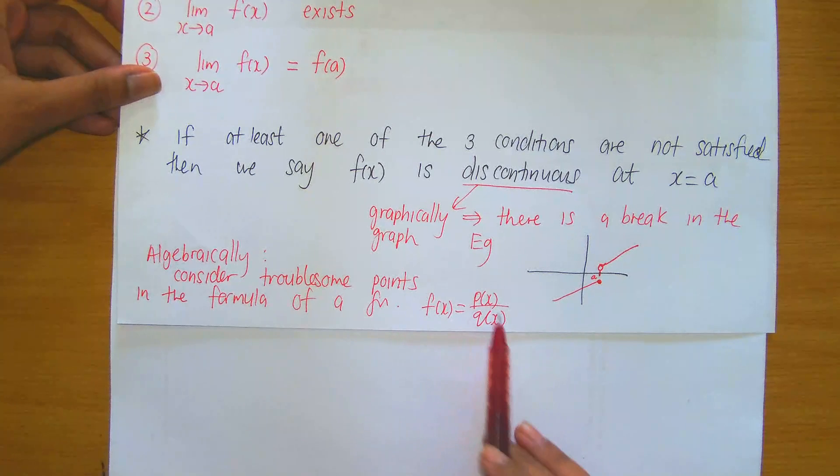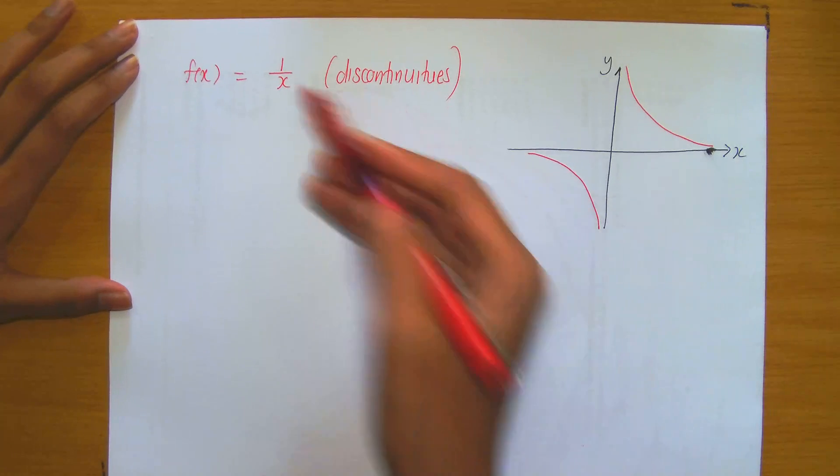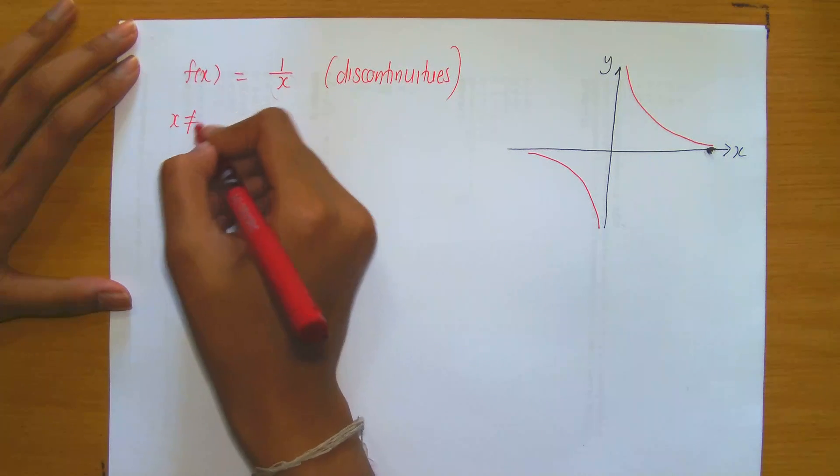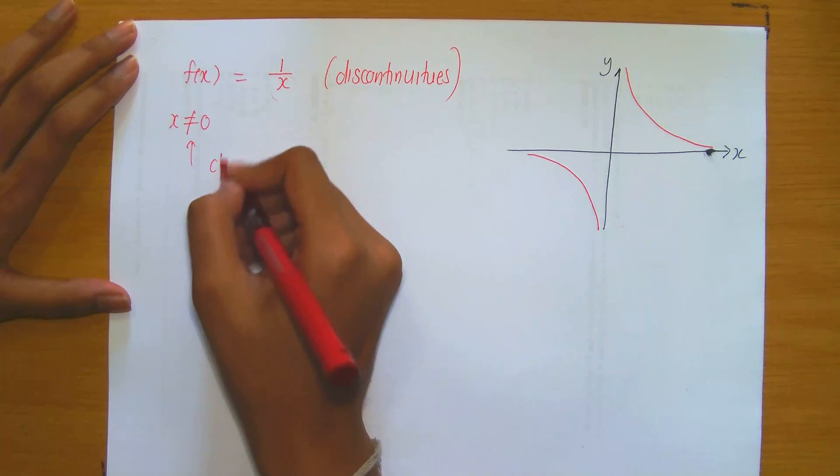Algebraically, you can look at the formula of the function and you can consider what's happening in the denominator or I told you look at it if it's a split function. Here in the denominator, observe that x cannot equal 0.